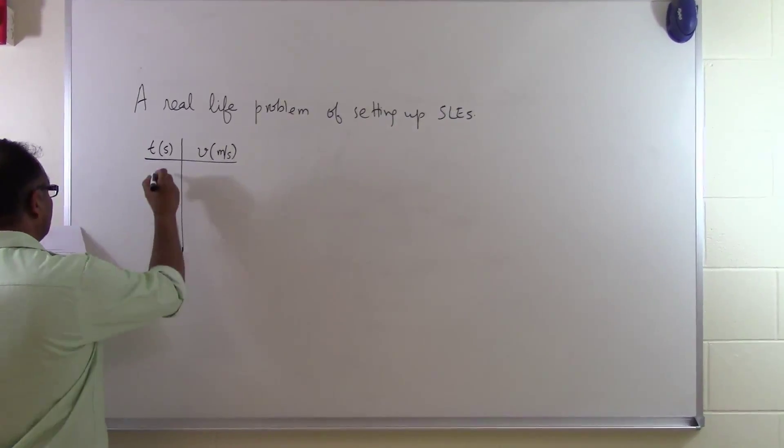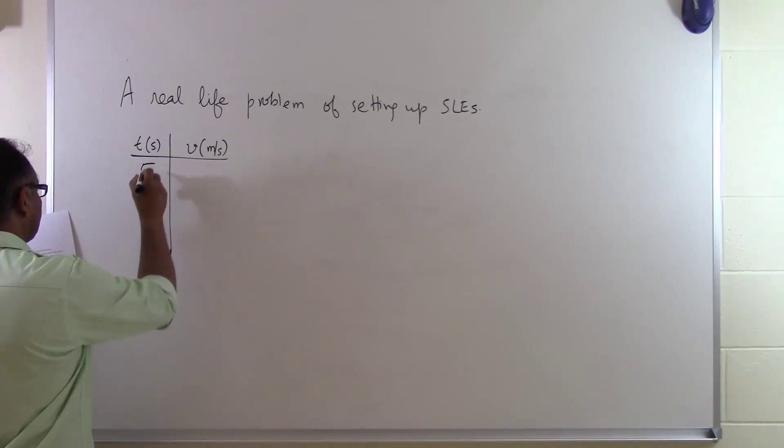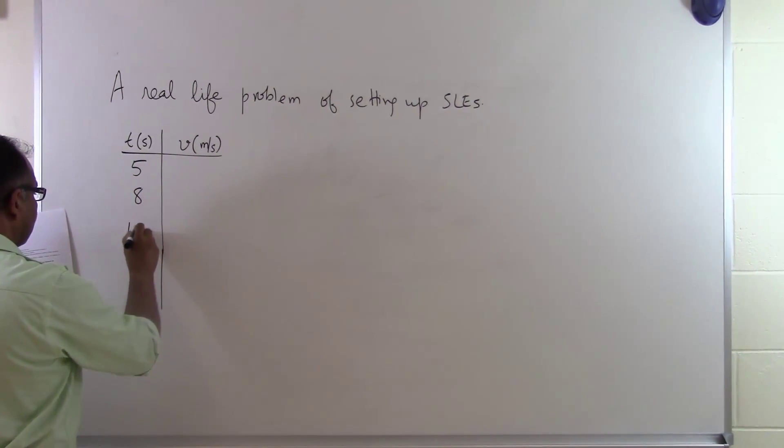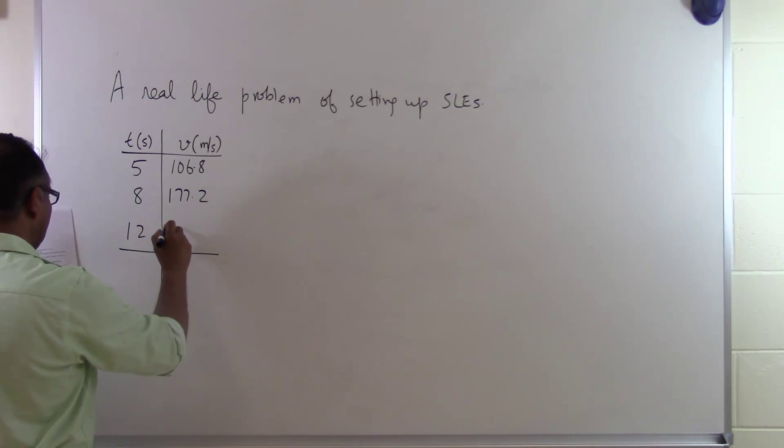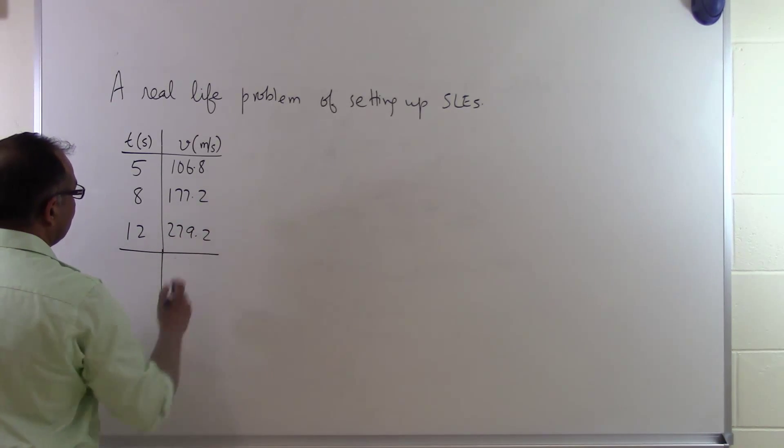We are given the velocity of the rocket at different times. This is 5, 8, and 12 seconds. And the values given as 106.8, 177.2 meters per second, and 279.2 meters per second.